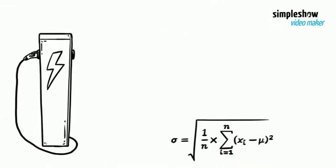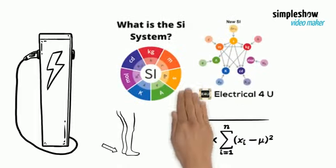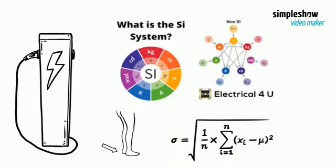The formula of electric field intensity is force divided by point charge. Its SI unit is N/C, and it is a vector quantity.